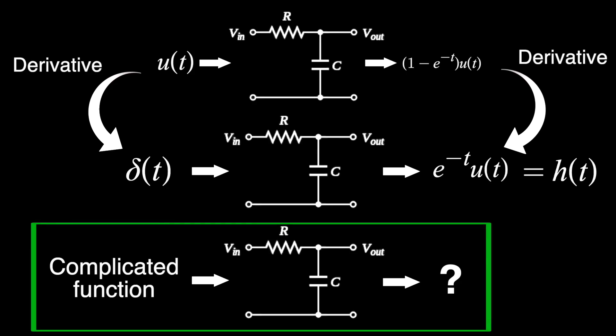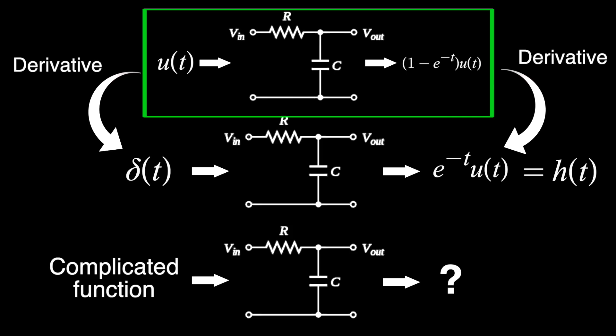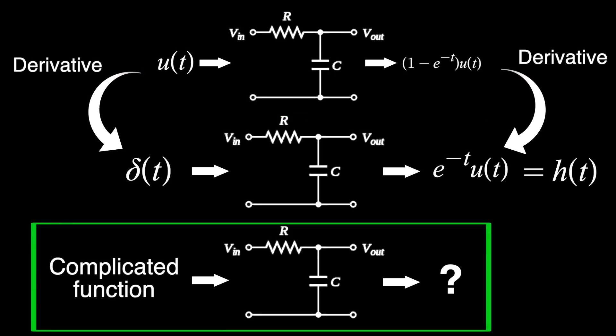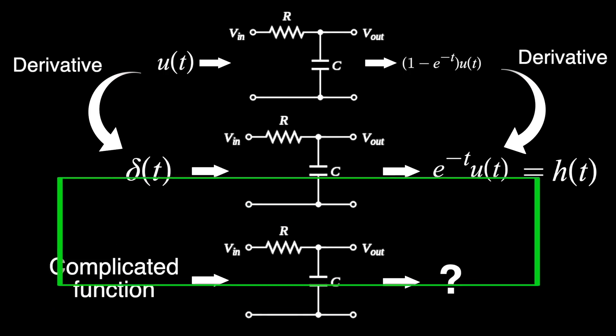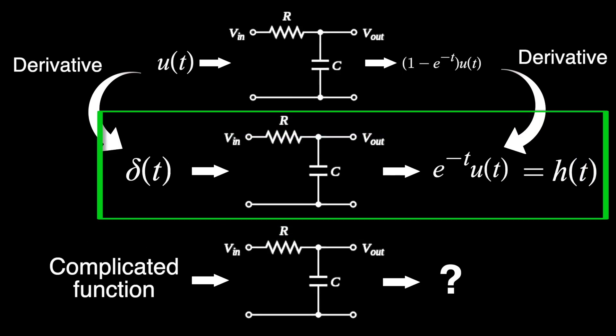So we can take something we've learned in a basic circuits class, which doesn't require too much advanced math, and use it to solve a problem that would require some more advanced math, like differential equations or the Laplace transform. And this is done through the power of the Dirac delta function and the unit impulse response.